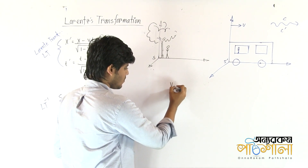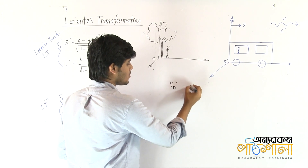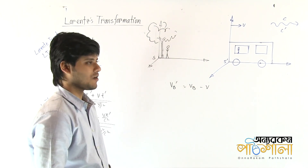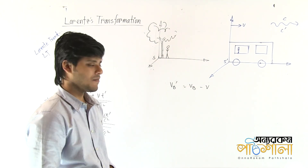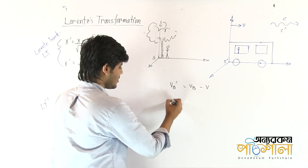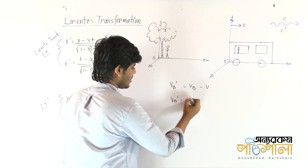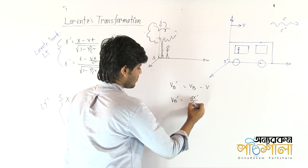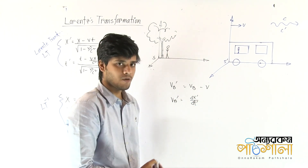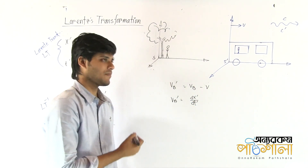This is VB' equals to VB minus V. What have we done here? VB' is delta X' by delta T'. You can see that in the next video.